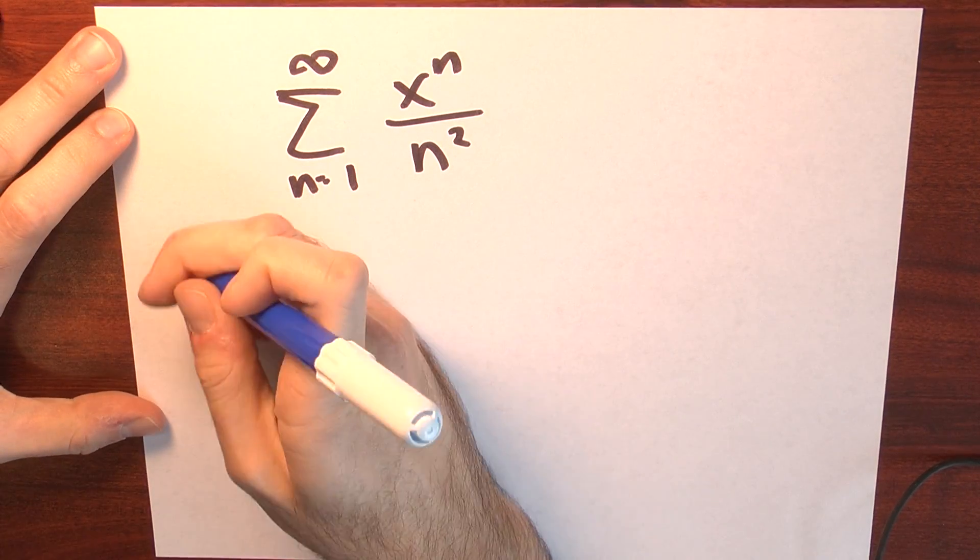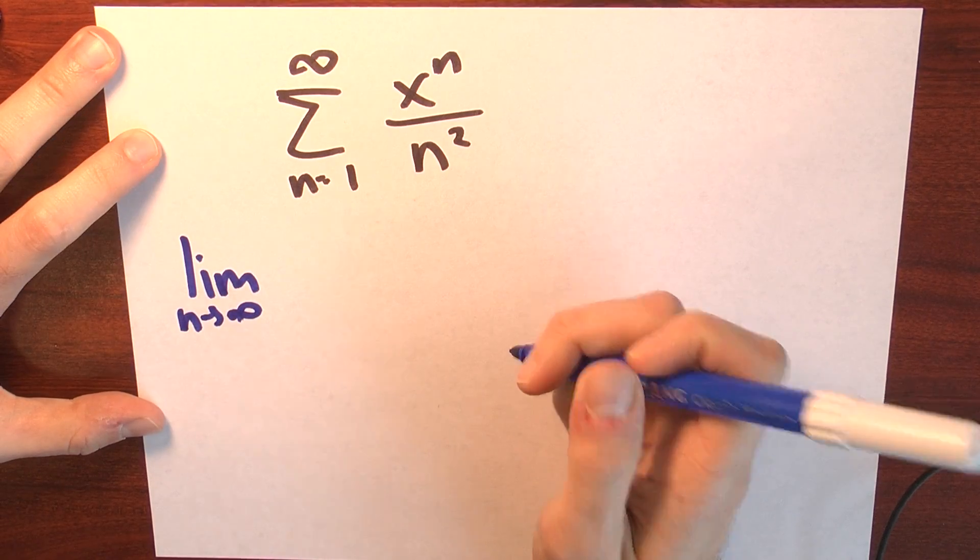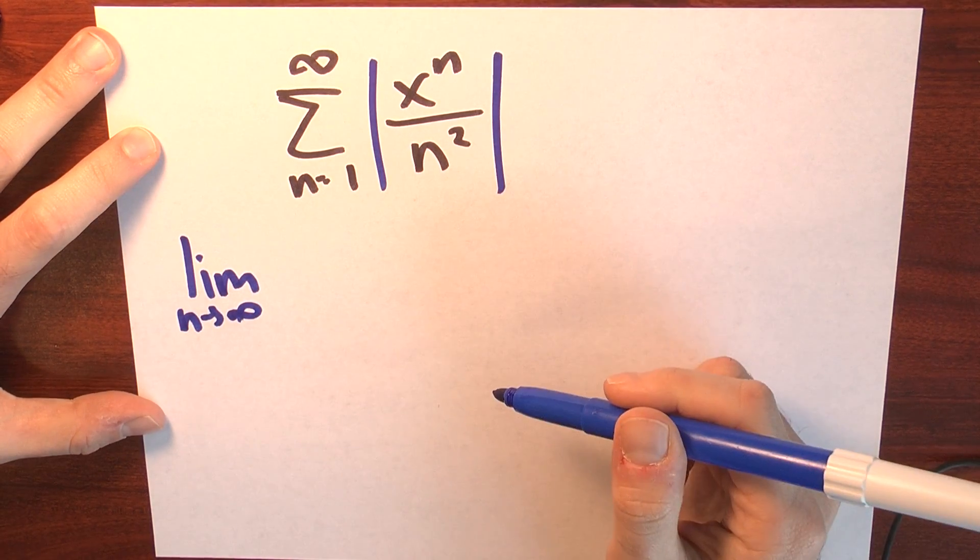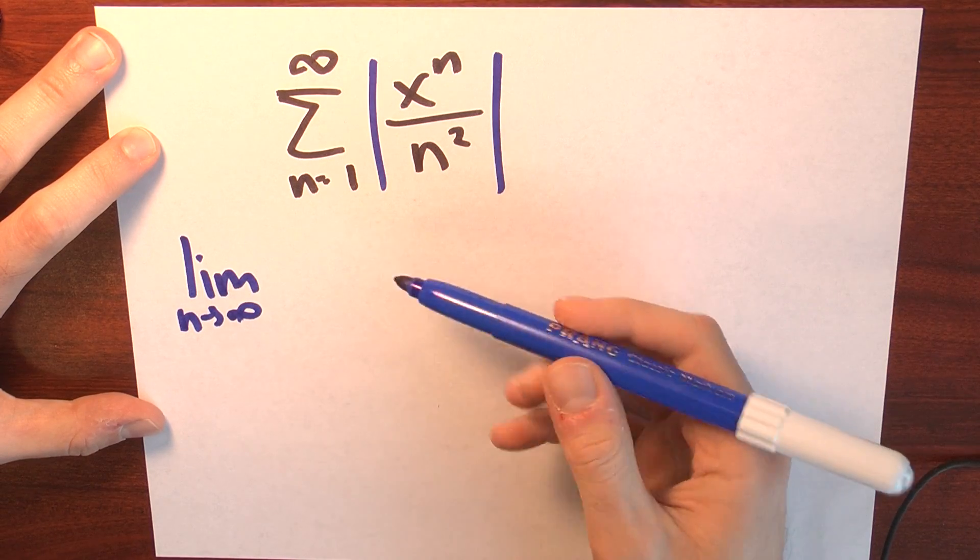Let's try the ratio test. I'm going to look for absolute convergence. I'm really trying to figure out for which values of x that series converges. And I'm going to look at the ratio of the n plus first term over the nth term.